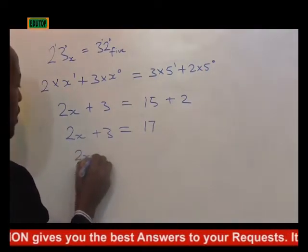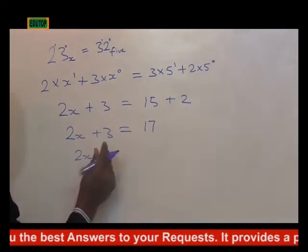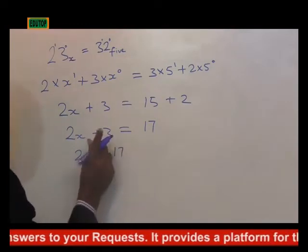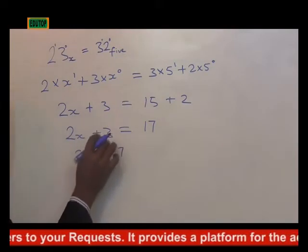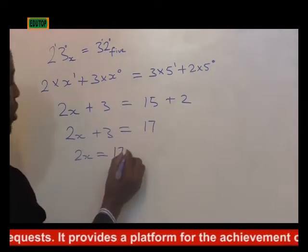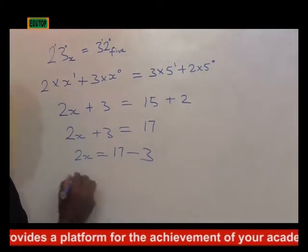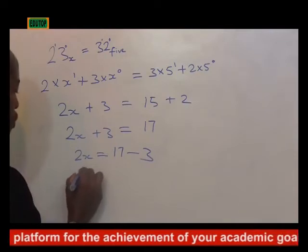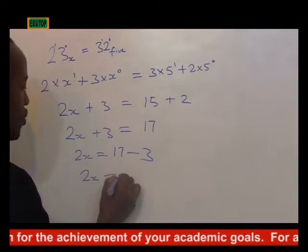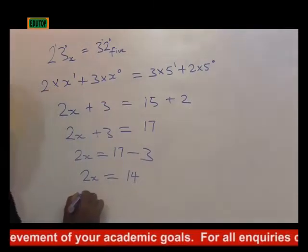Now we'll collect like terms. That will be 17. By the time this plus 3 crosses the equal sign, it will become minus 3. That will be 2x is equal to 17 minus 3, which is 14.